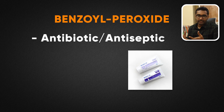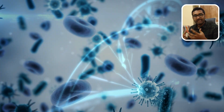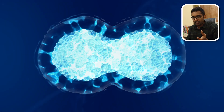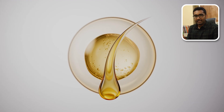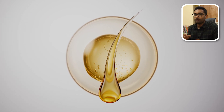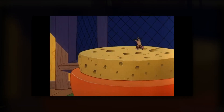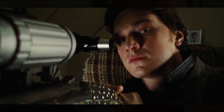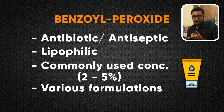How does the treatment work? Benzoyl peroxide is basically an antibiotic or antiseptic. It works by oxidizing bacterial proteins and inhibiting DNA synthesis, preventing bacteria from proliferating. Benzoyl peroxide is a lipophilic compound, so it can concentrate in the oily environment where bacteria reside. It is commonly used at concentrations of 2% to 5% and is available as face washes, soaps, creams, gels, and spot treatments.